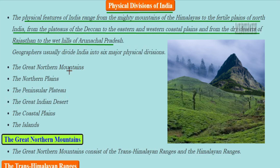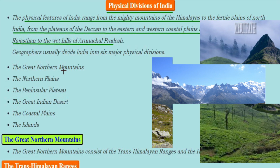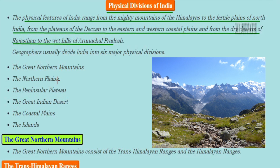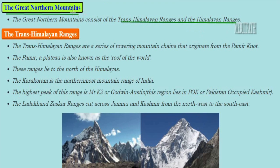Geographers usually divide India into six major physical divisions: the Great Northern Mountains, Northern Plains, Peninsular Plateau, Great Indian Desert, Coastal Plains, and Islands.